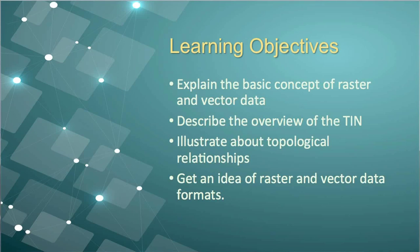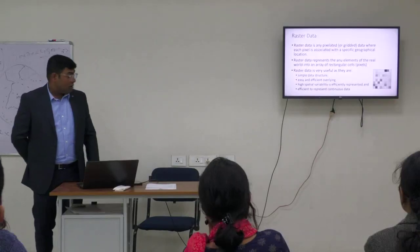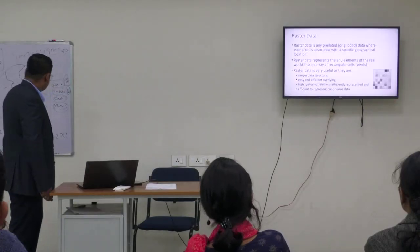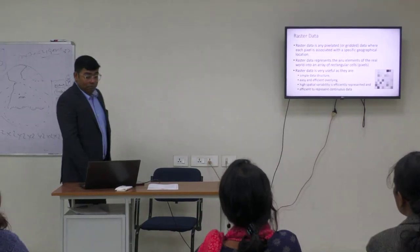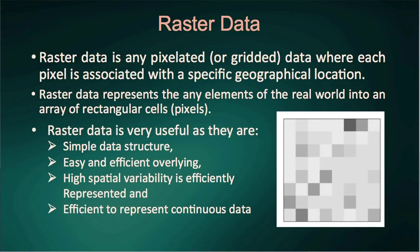Now, let's get an idea of raster and vector data formats. Raster data — as we all know, any digital picture is raster data. That means it's pixelated data. All the pixels contain digital information, a number. For example, an 8-bit image value of 60.